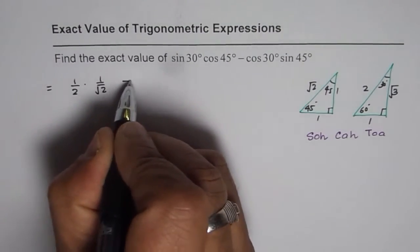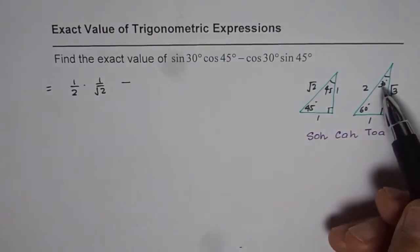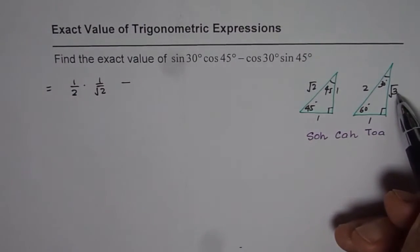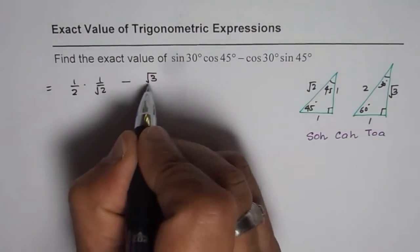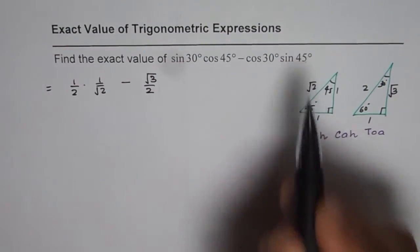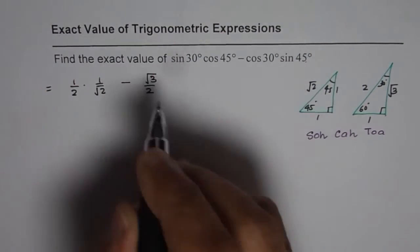Minus cos of 30 degrees: adjacent side is square root 3, so square root 3 over 2. And then sin of 45, which is 1 over square root 2.